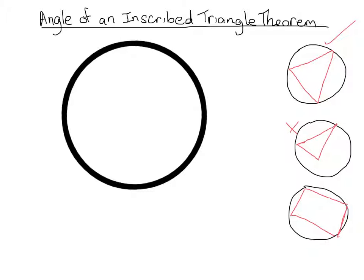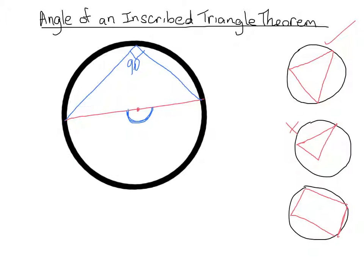Now let's talk about the inscribed angle of a triangle theorem. Here we have a diameter, and with a diameter comes a semicircle. If we create a triangle with an inscribed angle intercepted by that diameter, that inscribed angle has to be 90 degrees. That makes sense because the intercepted arc is 180 degrees, and the inscribed angle is always half the intercepted arc — so half of 180 is 90.